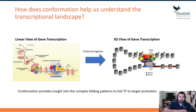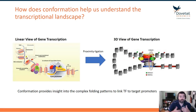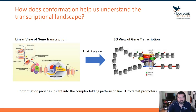That 3D structure, that interaction, that conformation, we refer to as the interactome, because the way we look at these data is by asking what parts of the genome are interacting with each other. That interaction frequency is reflected in the folding we see in the genome.